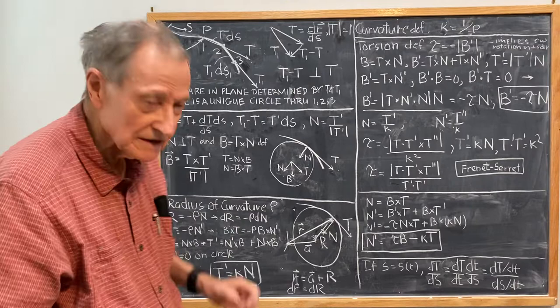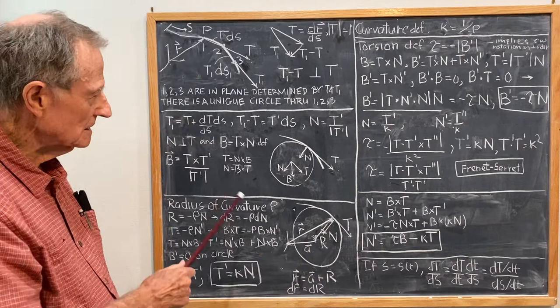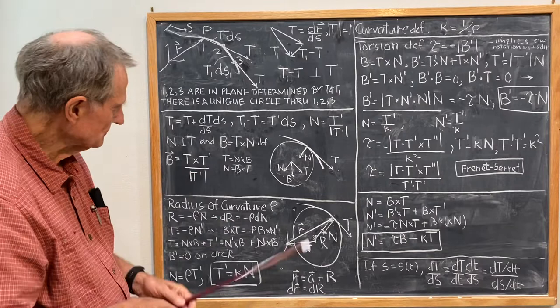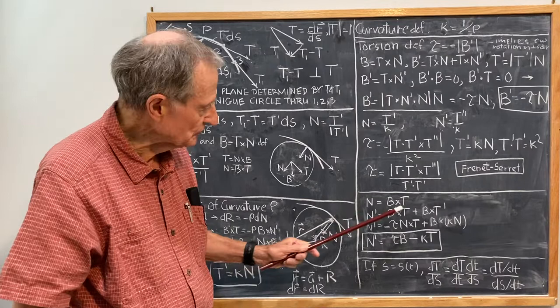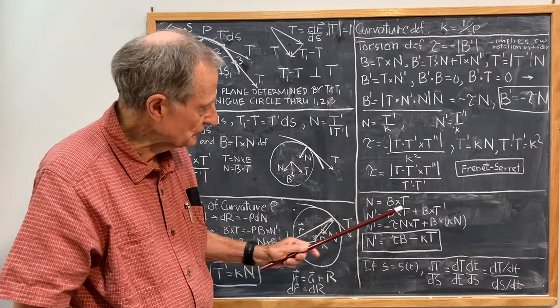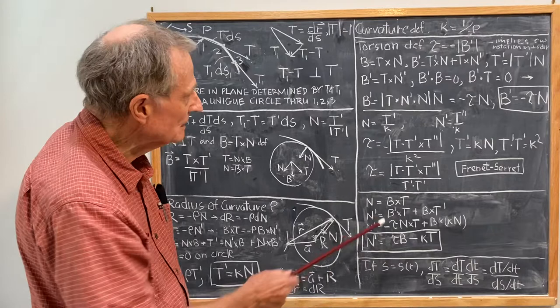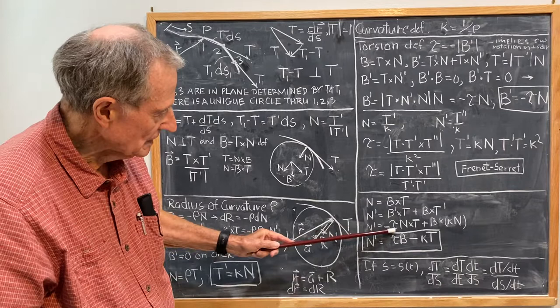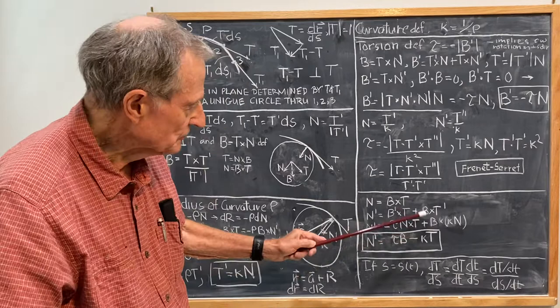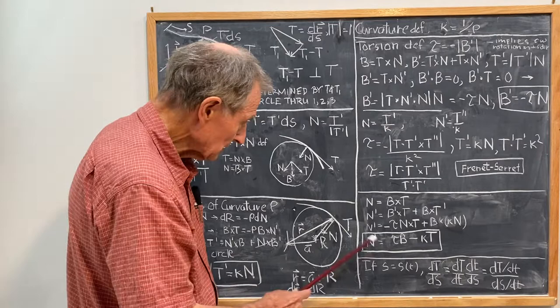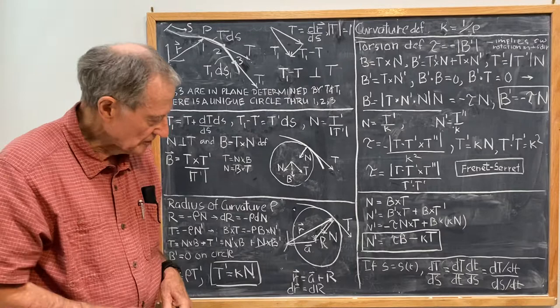Finally, after all of that, the final formula is rather easy. We start with N equal B cross T. Then N prime is equal to B prime cross T. Taking the derivative, N prime is B prime cross T plus B cross T prime. N prime is equal to B prime, which we have is minus τN, so N prime is minus τN cross T plus B cross T prime, and T prime is κN, so that N prime is equal to τB minus κT, which is the standard third Frenet-Serret formula.